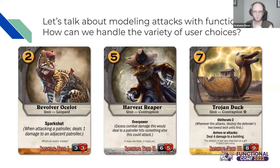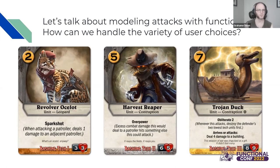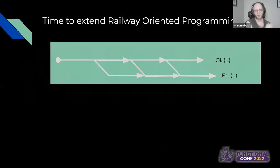Now we're getting to the main problem. We have three different cards that each have keywords that happen during an attack, which is a very basic thing in the game. Each of these things will often require that the user makes a choice about how it's going to happen. For example, this ocelot with the beret has spark shot — if it's attacking a patroller, it has an opportunity to do extra damage to an adjacent patroller. If there are multiple adjacent patrollers, the user chooses which one takes the extra damage.